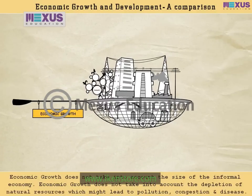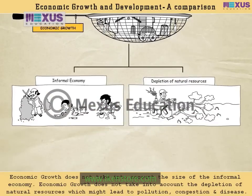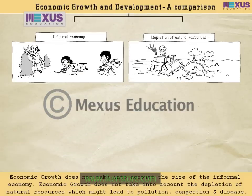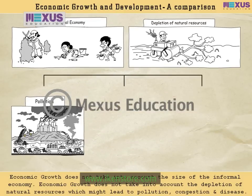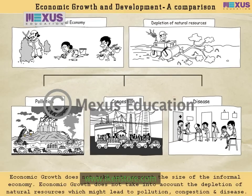Economic Growth does not take into account the size of the informal economy. Economic Growth also does not take into account the depletion of natural resources, which might lead to pollution, congestion, and disease.